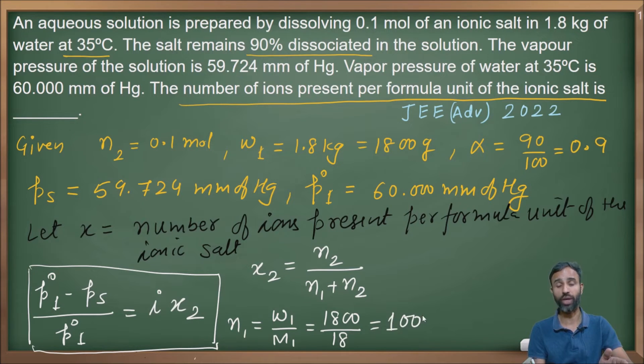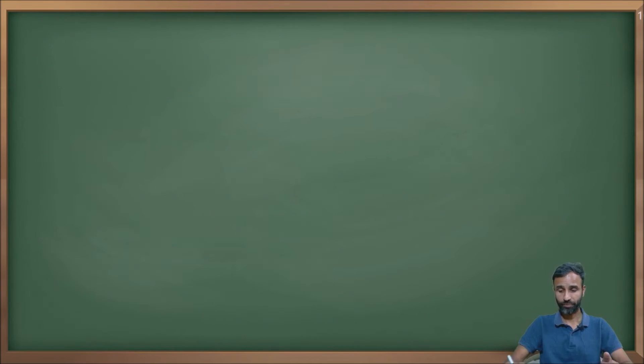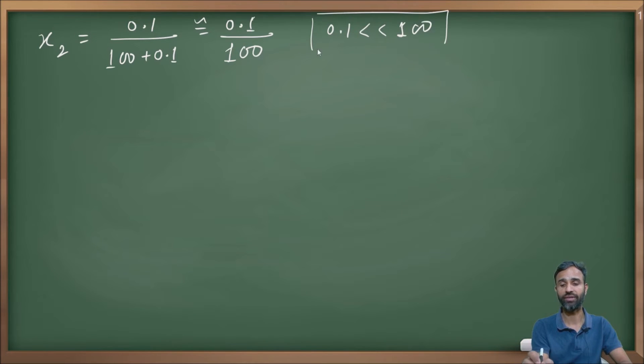Let us calculate X₂ = 0.1/(100 + 0.1). To make the calculation simple, we can take it as 0.1/100 because 0.1 is very, very less than 100.